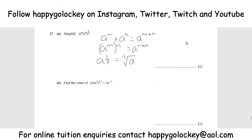First part: (27x⁶) to the power of a third. The first job is to do 27 to the power of a third. As we know, anything to the power of a third is a cube root. So we want the cube root of 27 — in other words, what cubed gives 27?